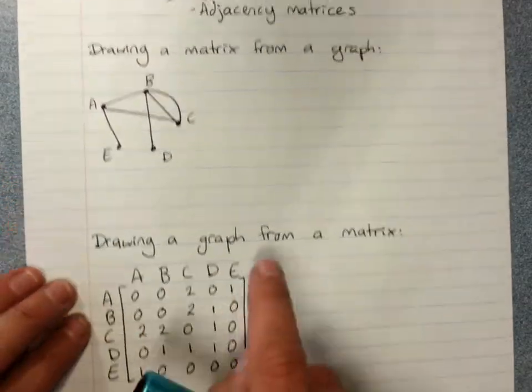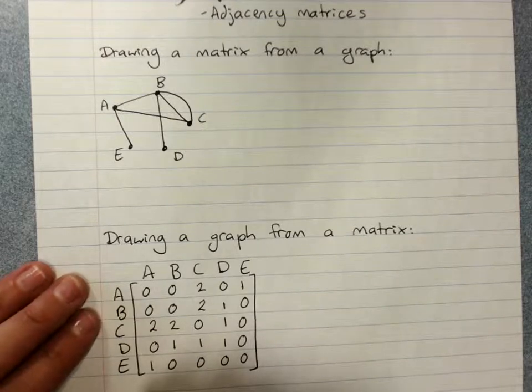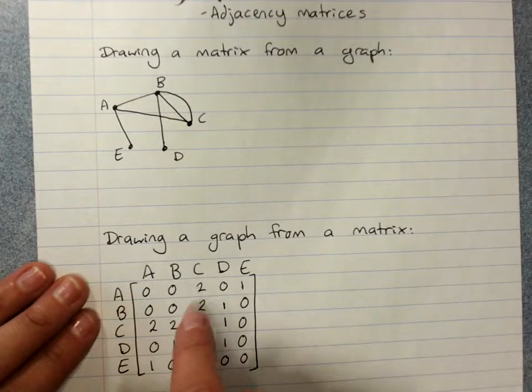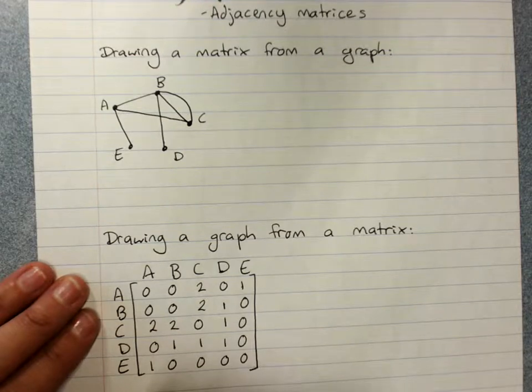And any graph can be represented as an adjacency matrix where the number between each set of connections shows us the number of edges joining those vertices.